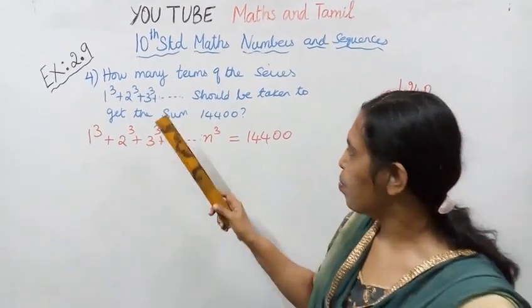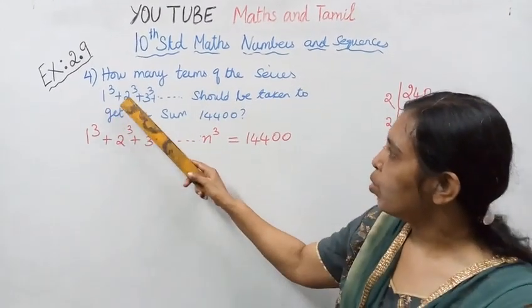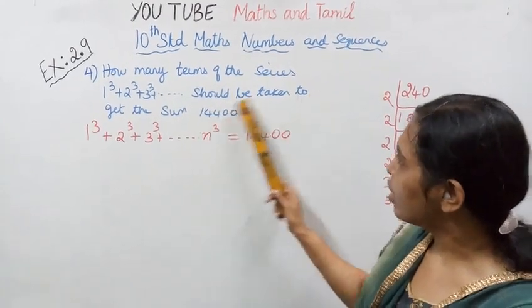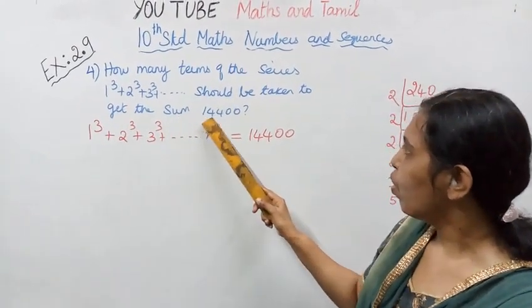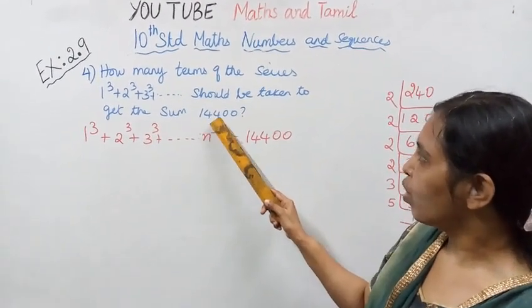How many terms of the series 1 cube, 2 cube, 3 cube, etc., should be taken to get the sum 14400?